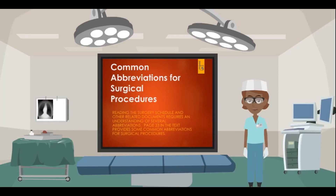Common abbreviations for surgical procedures: Reading the surgery schedule and other related documents requires an understanding of several abbreviations. Page 33 in the text provides some common abbreviations for surgical procedures, such as BKA — below the knee amputation — CABG — coronary artery bypass graft — and DNC — dilation and curettage.